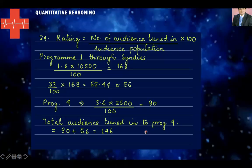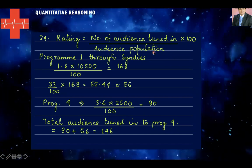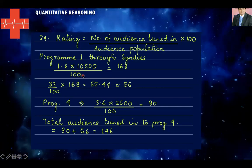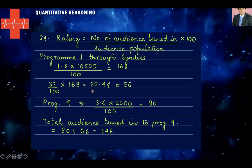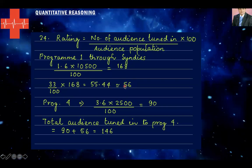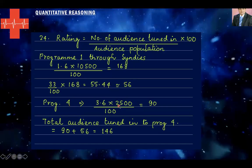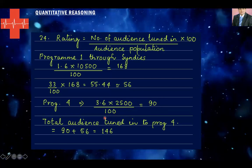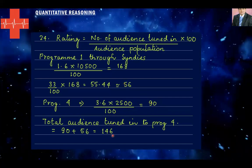Detailed solution: rating = number of audience tuned in × 100 / audience population. For program 1 through CINDIS: 1.6 × 10,500 / 100 = 168. Now find 33% of 168 = 54.44, rounded to 56 (since audience must be whole numbers). For program 4: 3.6 × 2,500 / 100 = 90. Total audience tuned into program 4 = 90 + 56 = 146. So 146 is the right answer.